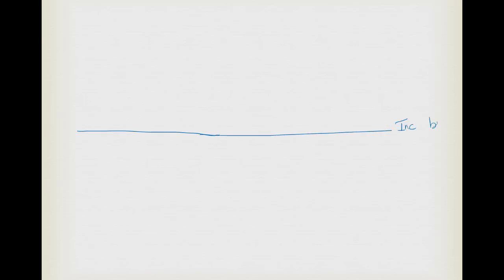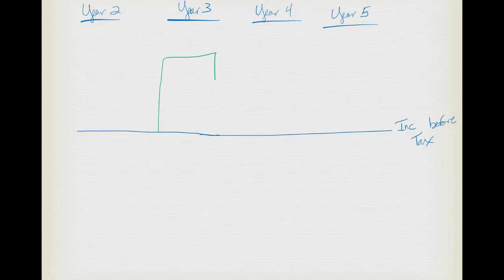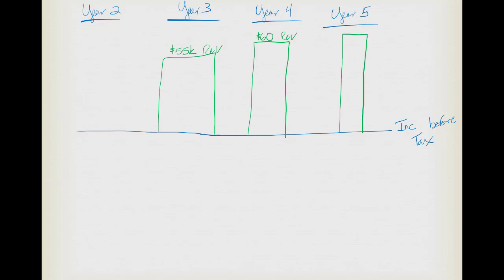We'll draw a timeline starting with income before taxes: year two, year three, year four, year five. We were told our revenues in year three would be $55,000 higher in the future for tax purposes. In year four it would be $60,000 higher, and in year five $65,000 higher.